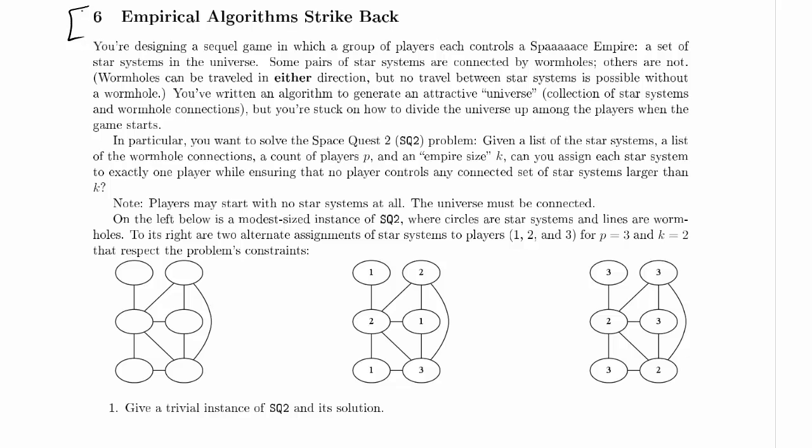We, by the way, assumed no travel between star systems was possible in the previous one, even though it didn't say that. I think that was a totally reasonable assumption. So this one is an undirected graph, because wormholes can be traveled in either direction. We've written an algorithm to generate an attractive universe, which is a collection of star systems and wormhole connections, but we're stuck on how to divide the universe up among the players when the game starts.